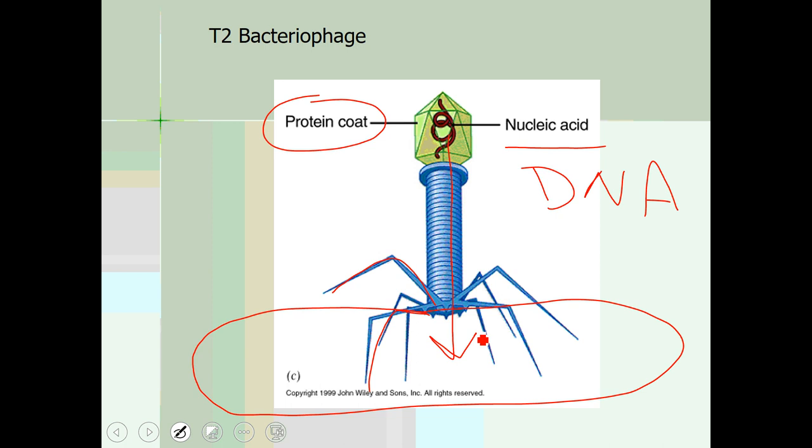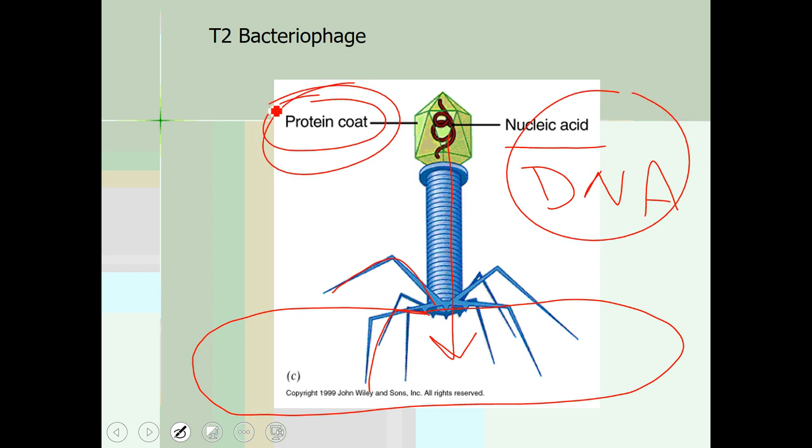Hershey and Chase were trying to figure out which part of this virus — the DNA part or the protein part — is the genetic molecule. Looking at this picture it seems obvious that the DNA is being injected. But they couldn't see that happening. Viruses are really too small — even today you need an electron microscope — and in the 1950s the technology would not allow them to see what these viruses were doing. They had to figure out a way to track what was happening to the protein coat and what was happening to the DNA.